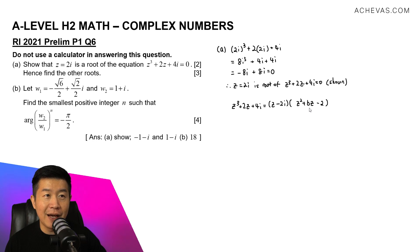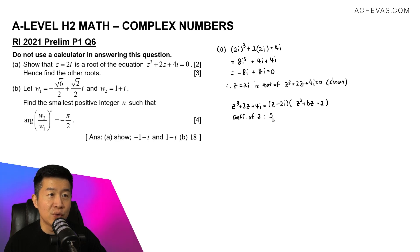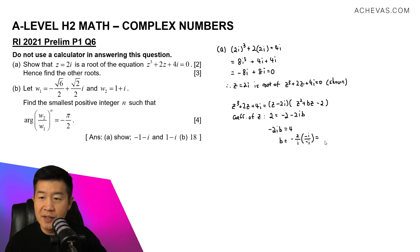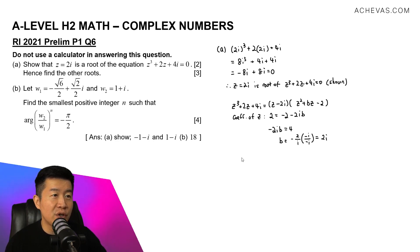To solve for b, I compare the coefficient of z. On the left-hand side, the coefficient of z is 2. On the right-hand side, the coefficient of z comes from z × (−2) which is −2, plus (−2i) × b. So −2 + (−2i)b = 2, giving (−2i)b = 4, so b = −2/i. Rationalizing by multiplying numerator and denominator by −i gives b = 2i.